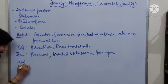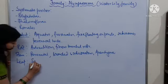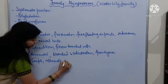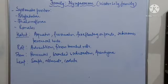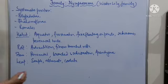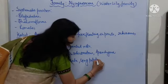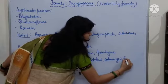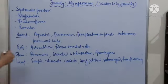Next is the leaf. Leaf is simple, alternate, generally cordate — which is heart-shaped. They have a long petiole. They may be submerged or free floating.